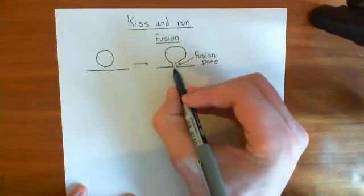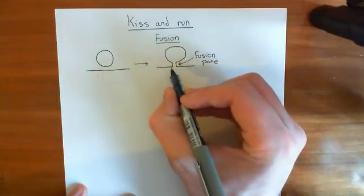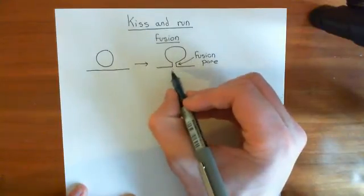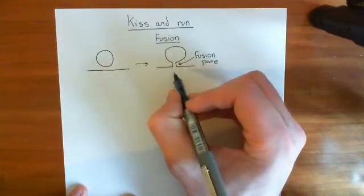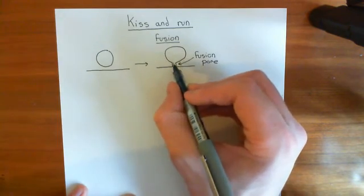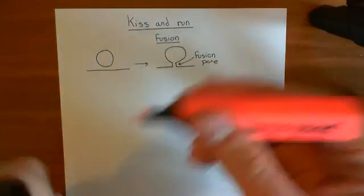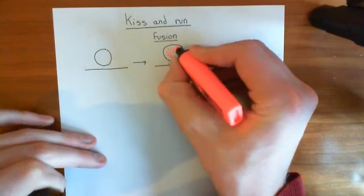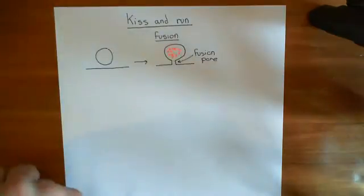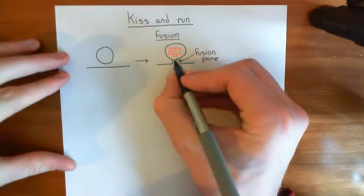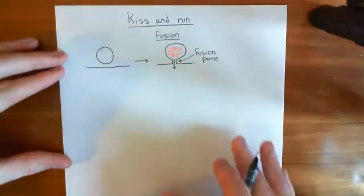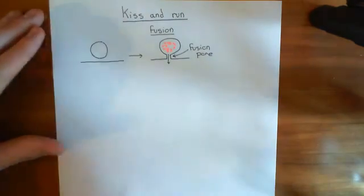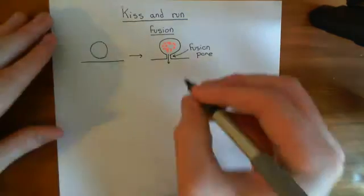This fusion pore is very, very small, but it is capable of conducting neurotransmitter molecules through it. So neurotransmitter can start leaving the synaptic vesicle lumen — if these are the synaptic vesicle's contents, the neurotransmitter — you can get the movement of neurotransmitter through this fusion pore and the release of some of that neurotransmitter into the synaptic cleft.